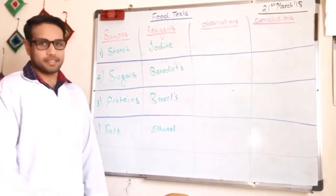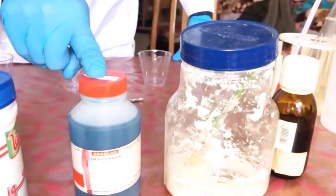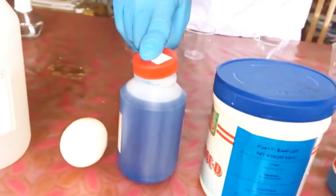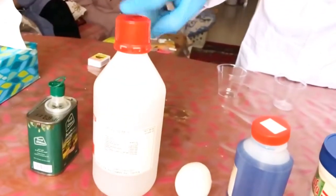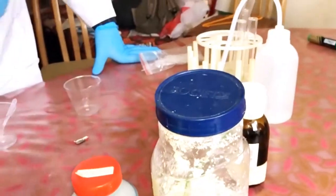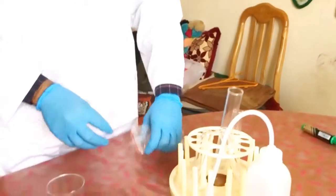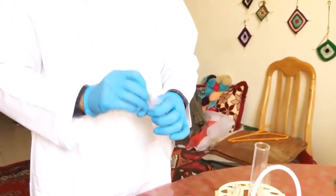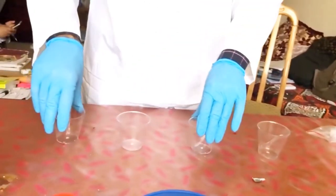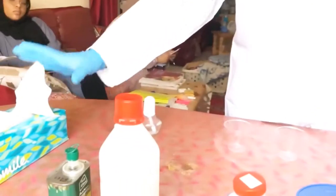The materials required are iodine solution with starch powder, benedict solution with sugar powder or glucose, buret solution with an egg as a sample, and ethanol solution with olive oil. We also need distilled water, a flask, three normal test tubes, one boiler tube for the sugars test because we need to do heating, some pipettes, clamps for mixing, beakers or disposable plastic cups, a spirit lamp for heating, match stick, and some tissue.